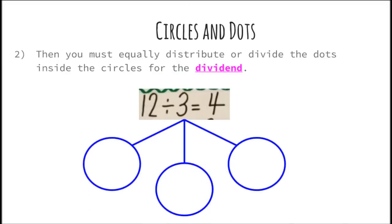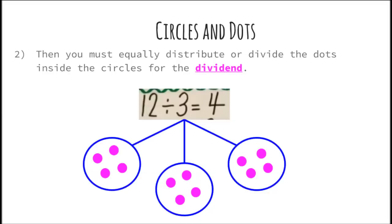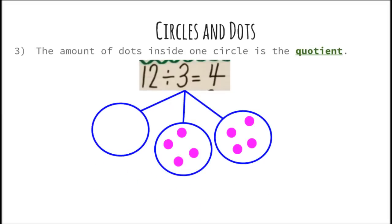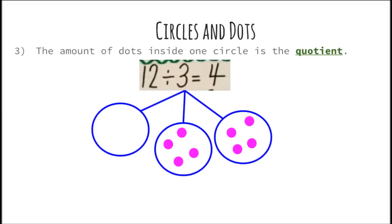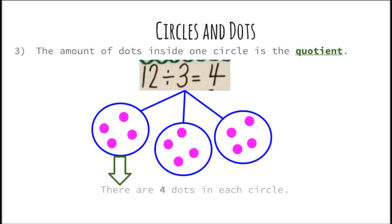Then we will equally distribute or divide the dots inside the circles. We count 1 through 12, evenly distributing the dividend of 12 across the 3 circles. Now we must find the quotient. The amount of dots inside one circle is the quotient. Counting the dots in one circle: 1, 2, 3, 4. There are 4 dots in each circle, so the quotient is 4.